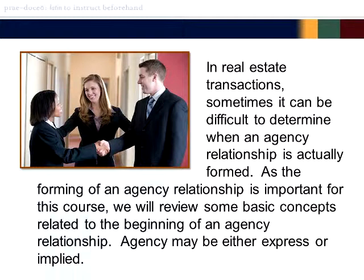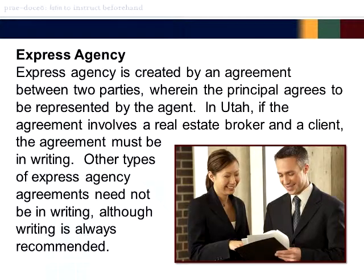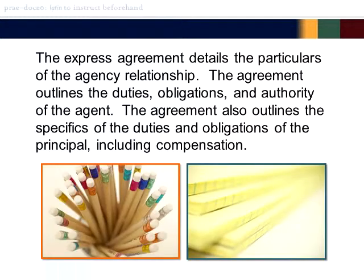Agency may be either express or implied. Express agency is created by an agreement between two parties, wherein the principal agrees to be represented by the agent. In Utah, if the agreement involves a real estate broker and a client, the agreement must be in writing. Other types of express agency agreements need not be in writing, although writing is always recommended. The express agreement details the particulars of an agency relationship, outlining the duties, obligations, and authority of the agent, as well as the duties and obligations of the principal, including compensation.